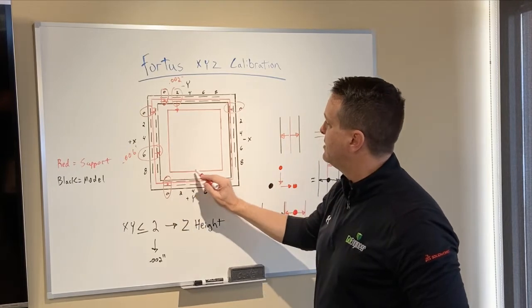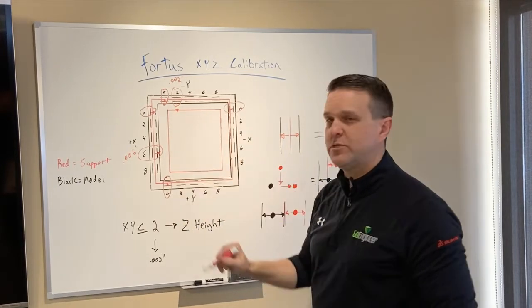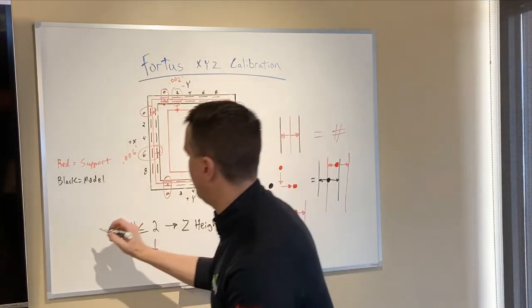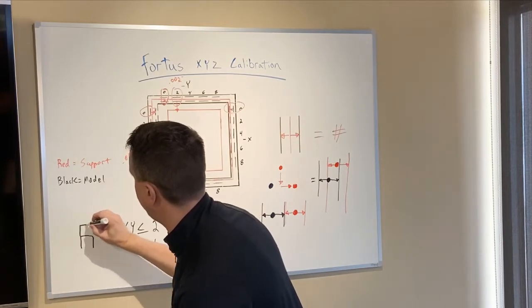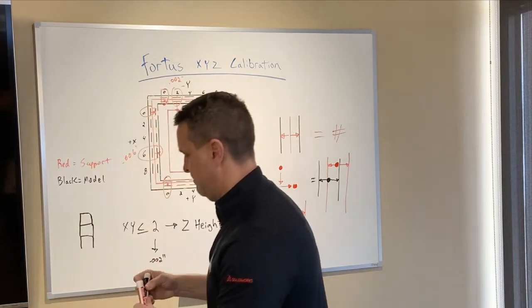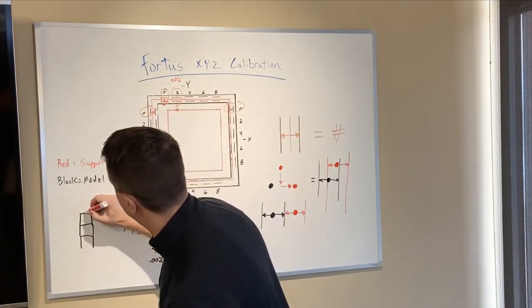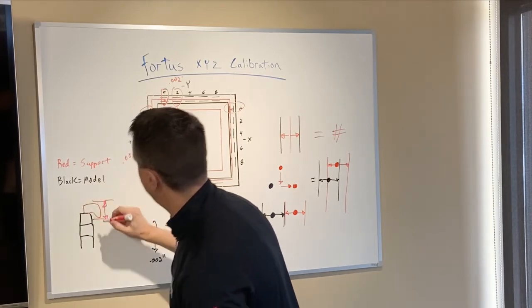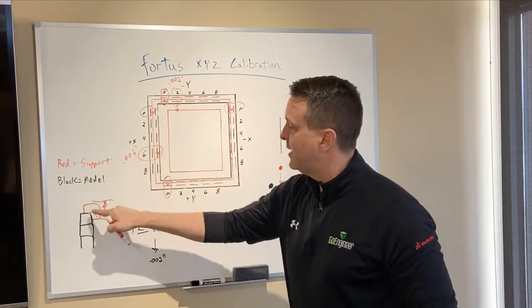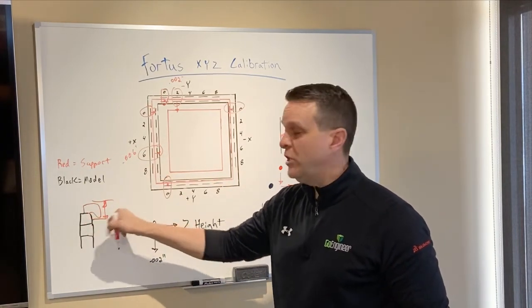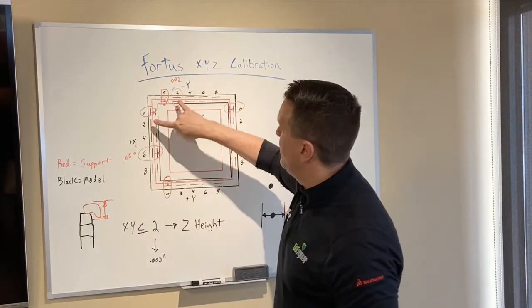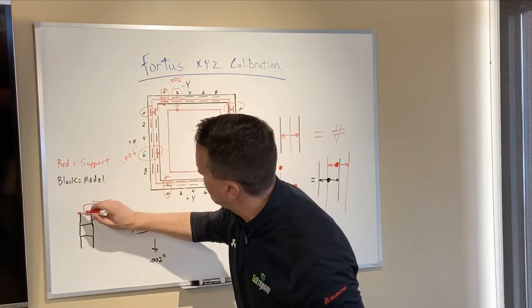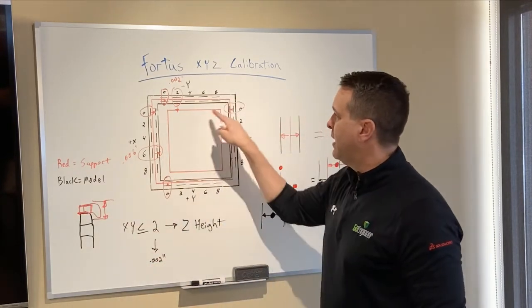And what you'll end up doing is you'll take off this top layer of support material and measure it. The system in the center square actually has drawn model material below it. What happens if it's too far off, like in this case, the support will droop and you will get a false reading on your height. Hence the reason we need it to be 2,000s or less so that this sits flat right across the top here and gives me an accurate height reading on my Z.